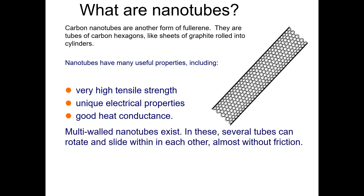You can have multi-walled nanotubes, and in these, several tubes can rotate and slide within each other almost without friction. You can have single-walled carbon nanotubes and multi-walled carbon nanotubes. The good thing about these nanotubes is that some of the tubes can easily rotate within themselves, and that rotation can be without friction.